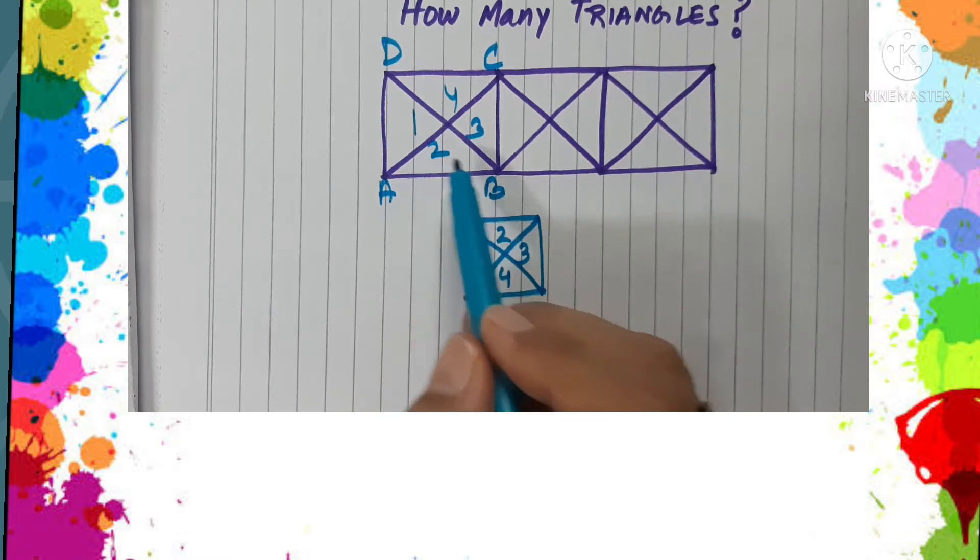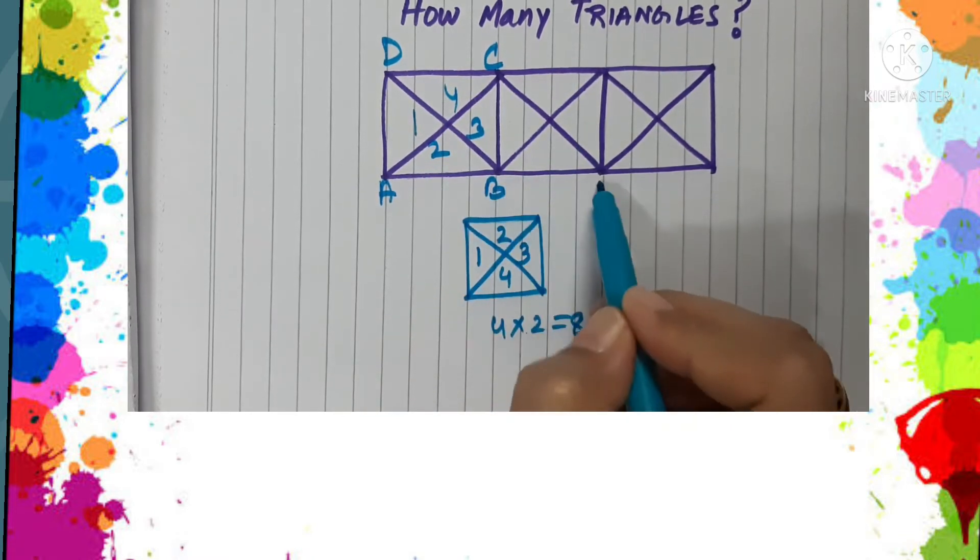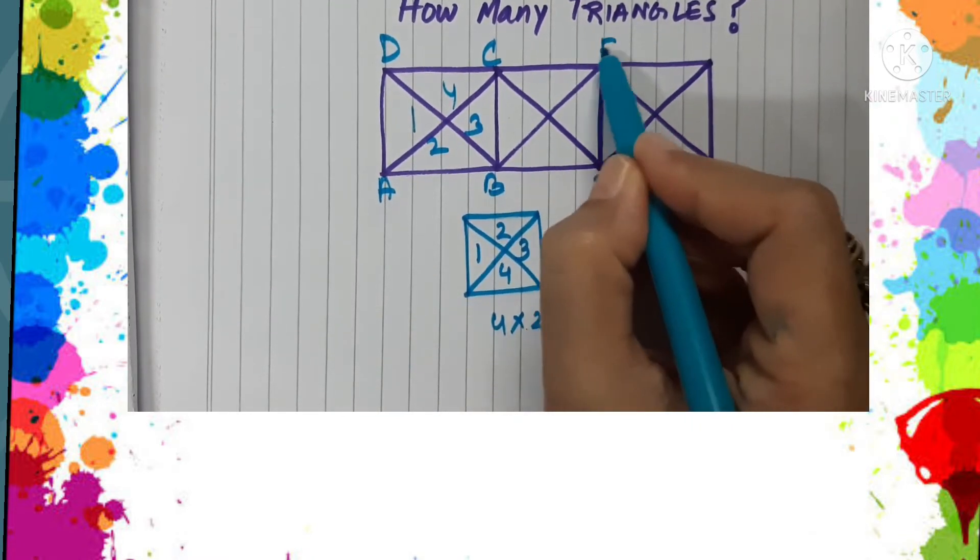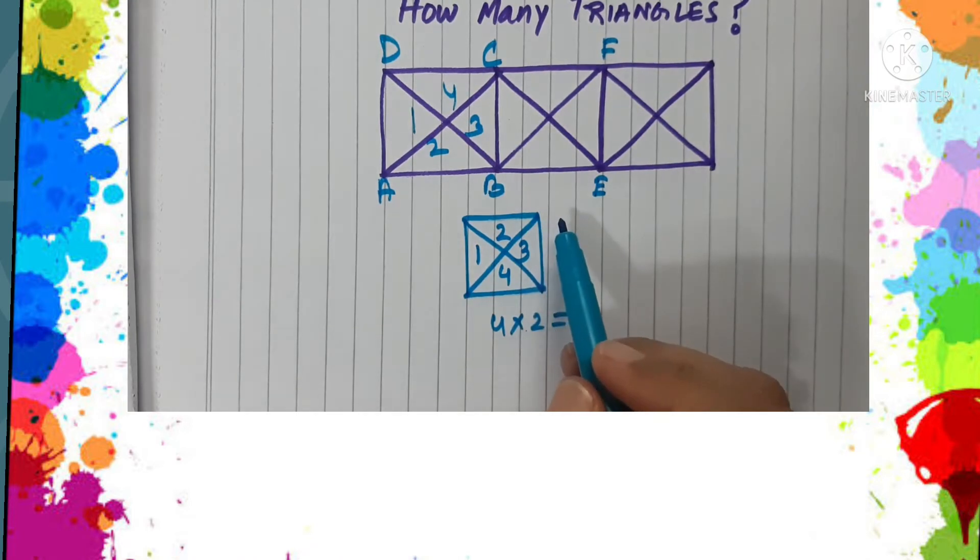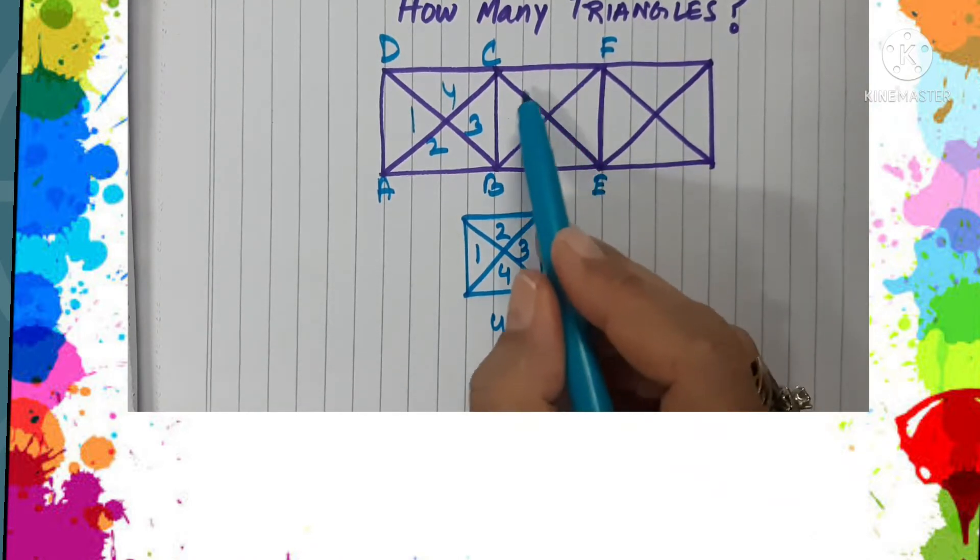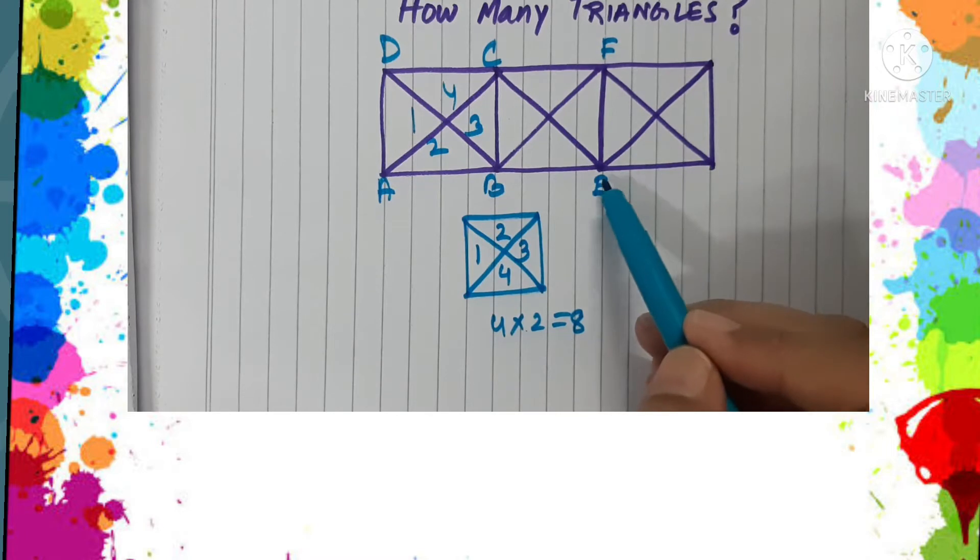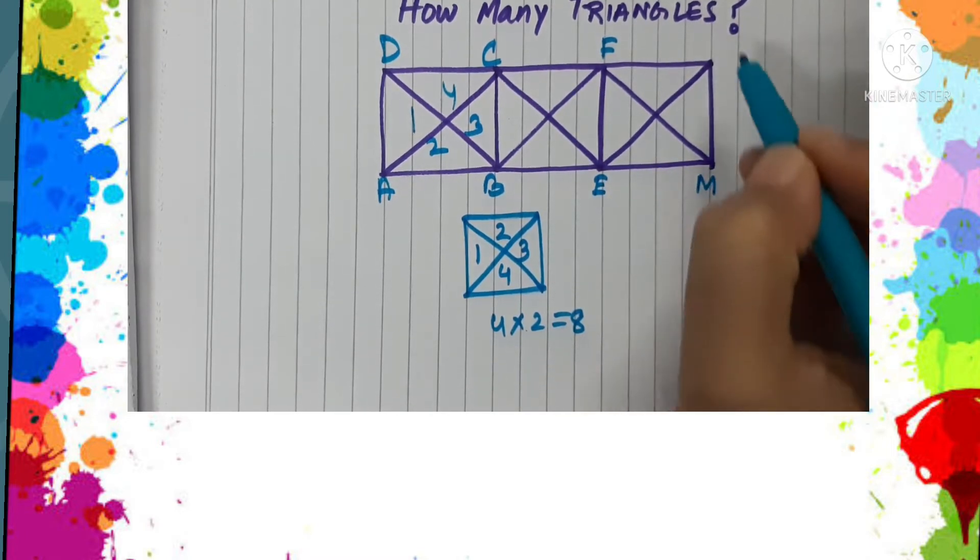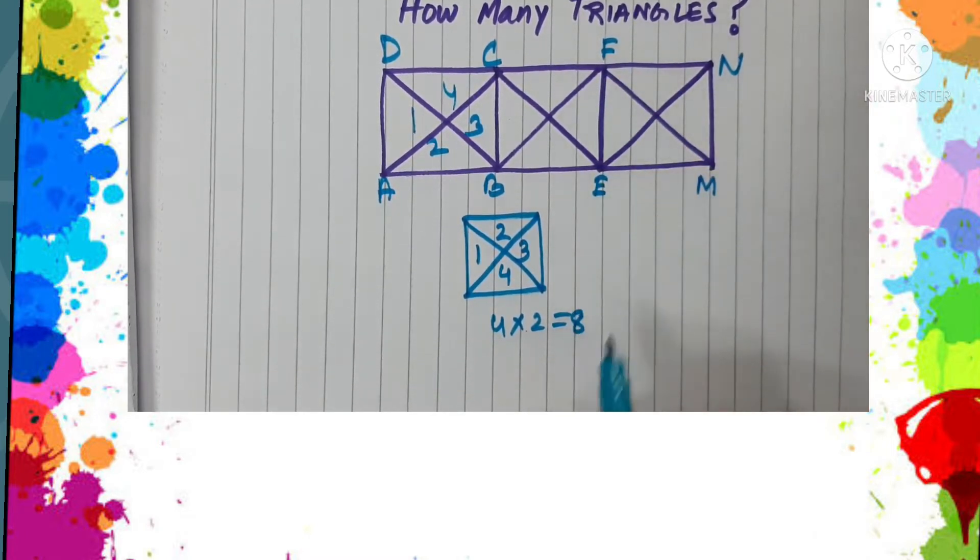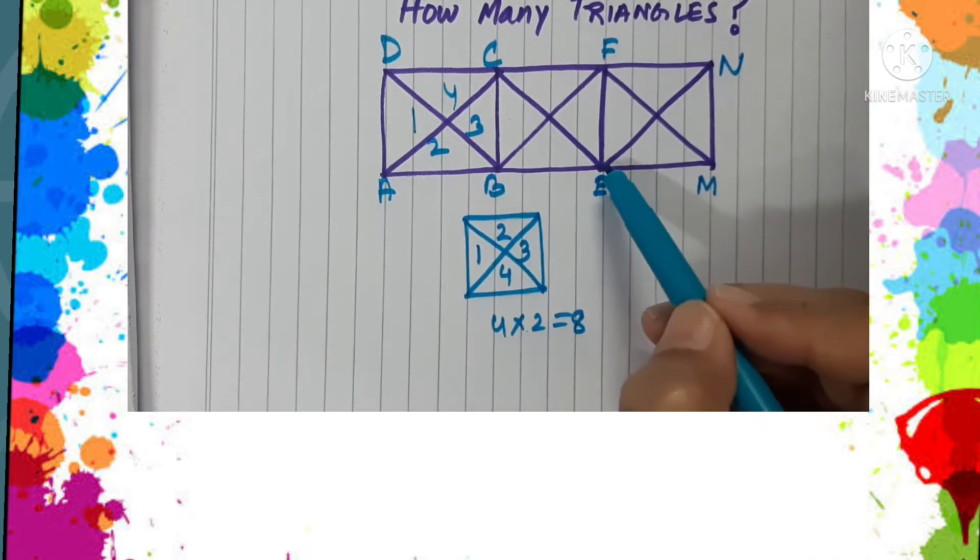Similarly, you notice that BEFC is also another square which is divided into 4 parts, so here also we get 8 number of triangles. Similarly, EMNF is a square which is divided by 2 diagonals into 4 parts. Here also we get 8 triangles.